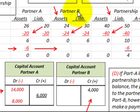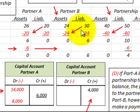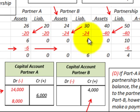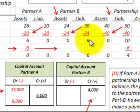Looking at Partner B: they have assets of $24,000 offset against liabilities of $30,000. The net amount is $6,000 worth of liabilities — so they are insolvent with $6,000 more in liabilities than assets.